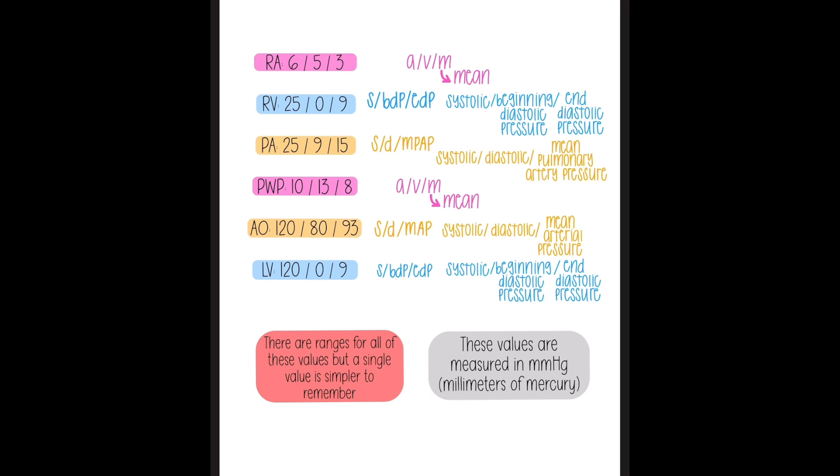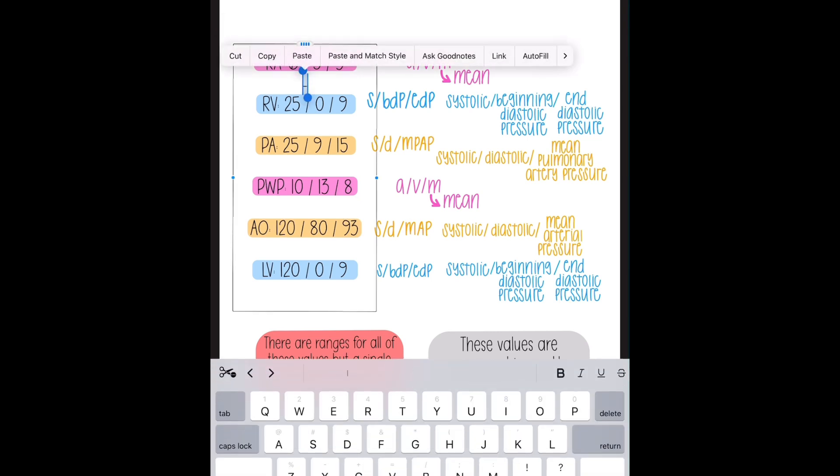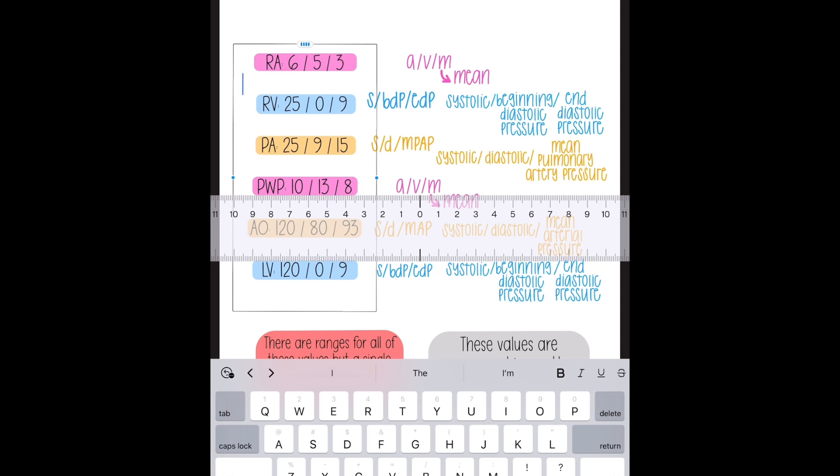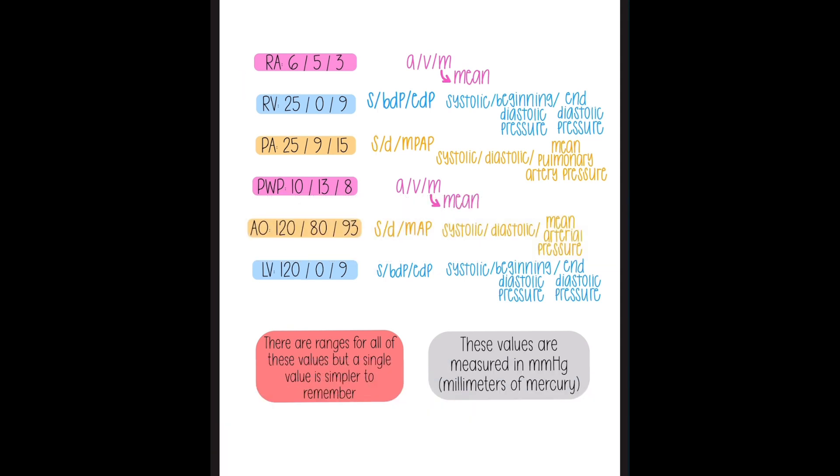But imagine if you were learning ranges for each of these, that can be very difficult to do successfully. So kind of start here with the basics. And then when you're a little more advanced, you can learn some of these exact ranges for the LVEDP, RVEDP, and the wedge pressure mean, which are some of the important ones you want to know ranges for. And lastly, all of these values are in millimeters of mercury, MMHG. That is their unit of measure. So you would say, oh, the RA mean is three millimeters of mercury. That's a pressure measurement.